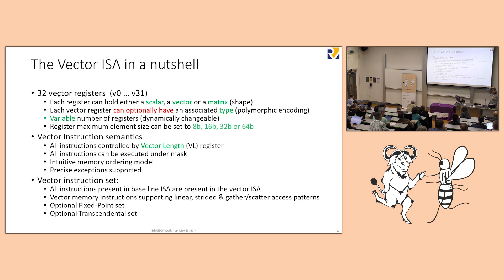We had a type system for polymorphic encoding but got feedback from hardware companies that it was a little too complicated to build, so we moved that to an option. What's interesting is that both the number of registers and the maximum length of one vector register are variable — and that's where most of the complexity could be.